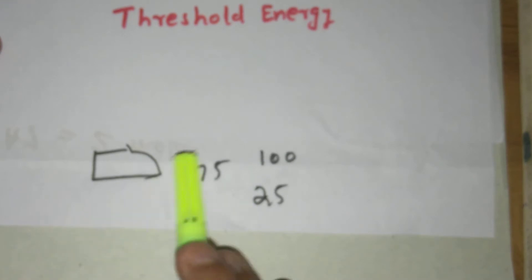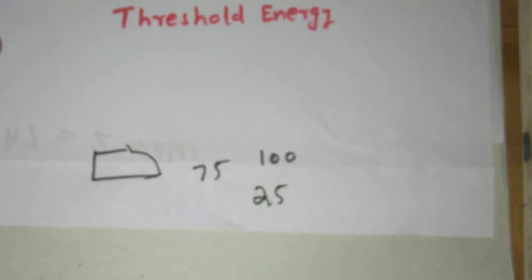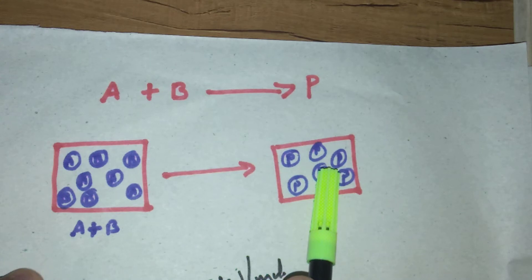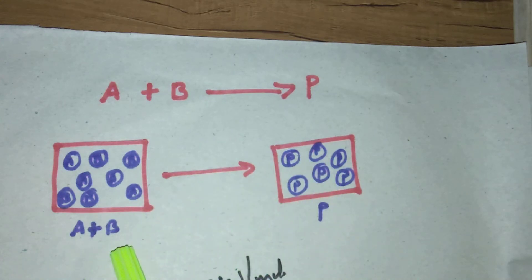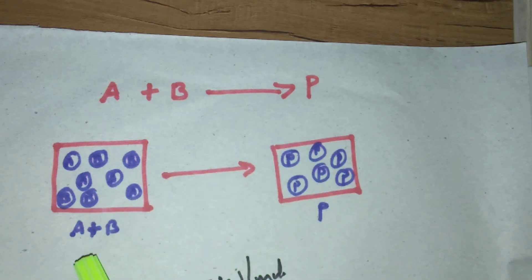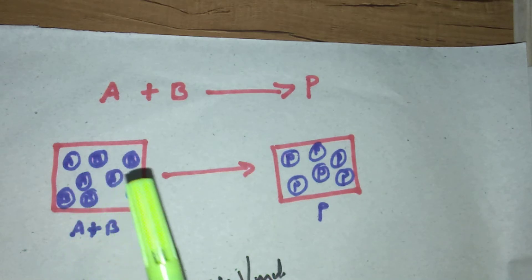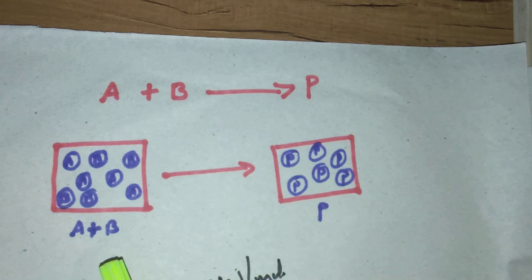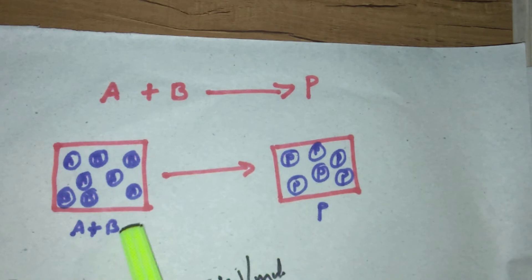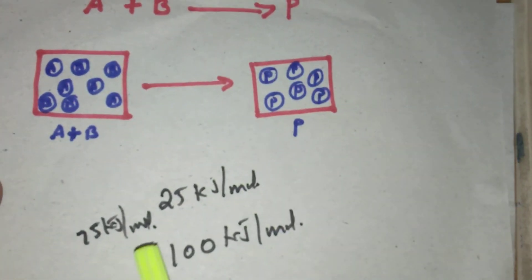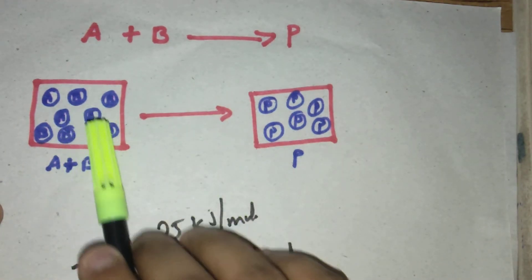In terms of chemical reaction, we call this $100 the threshold value, $75 the activation value, and $25 the average kinetic value. Now, A and B are the reactants. According to collision theory, reactant molecules collide with each other to form products, and only effective collisions lead to the formation of products or chemical change.